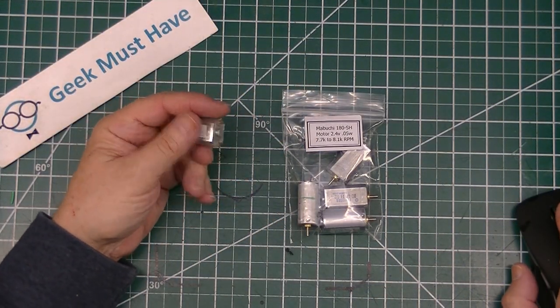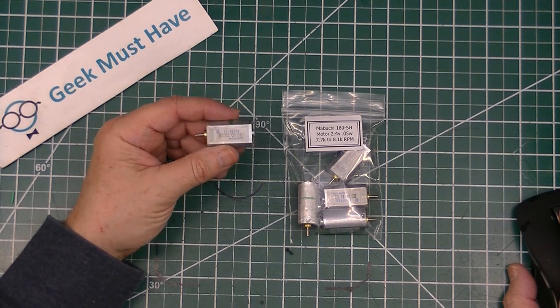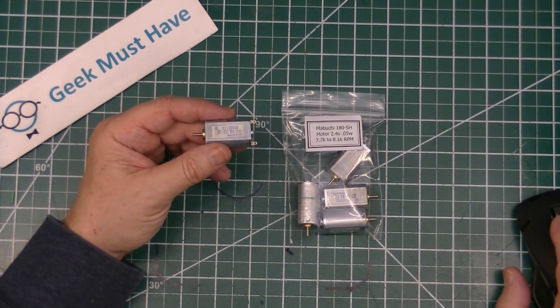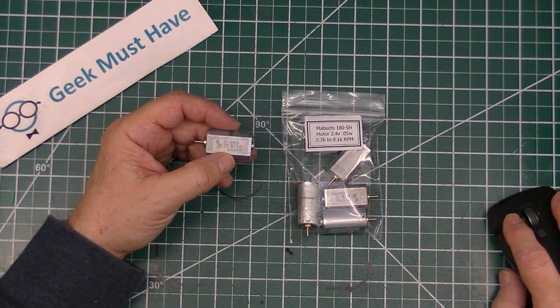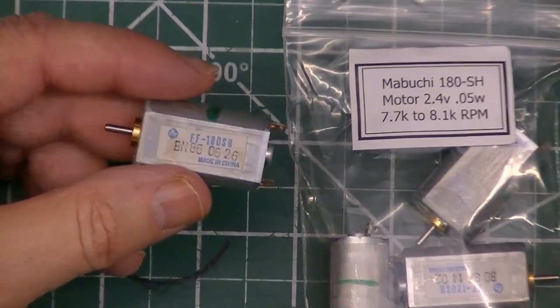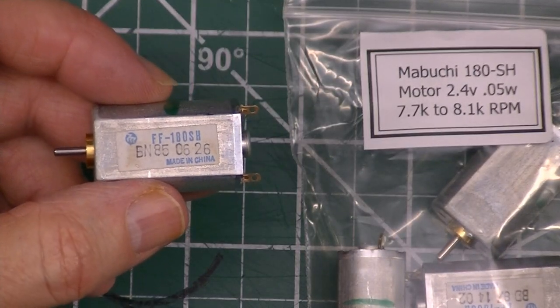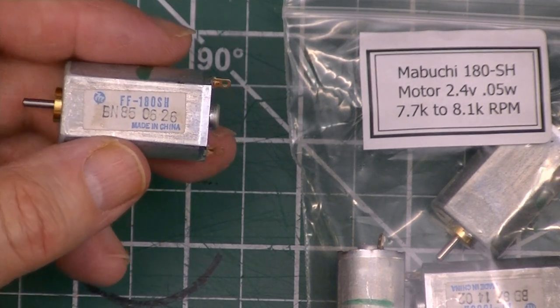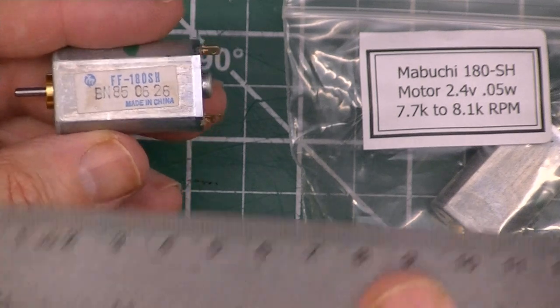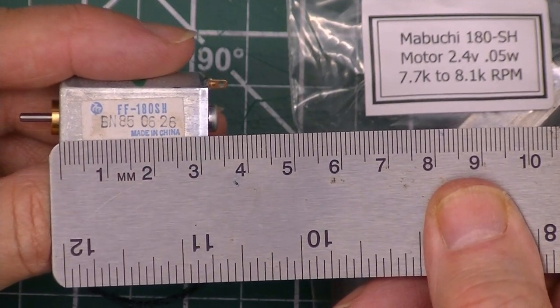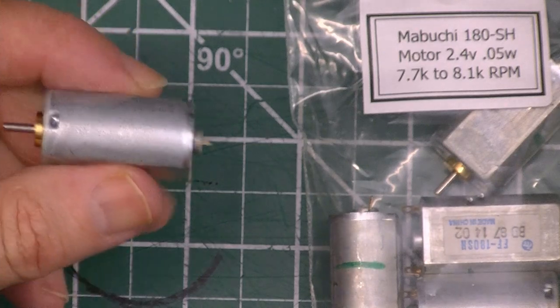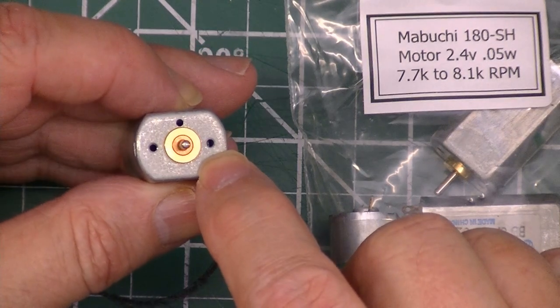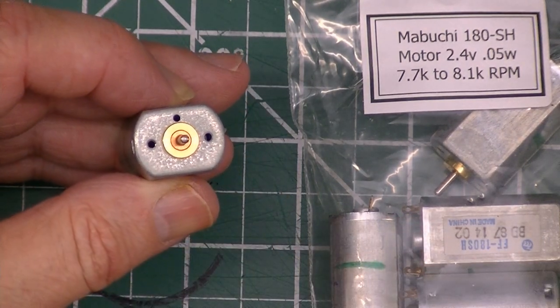This next item are these Mabuchi 180-SH motors. They run anywhere from 2.4 volts up to about 3.5 volts. Relatively high speed, 7,700 to 8,100 RPM depending on how many volts you push through it. They're roughly about 32 millimeters across, have flat sides on them which means they're fairly easy to mount, and they also have little screw holes in the front to mount them from the front if you want.